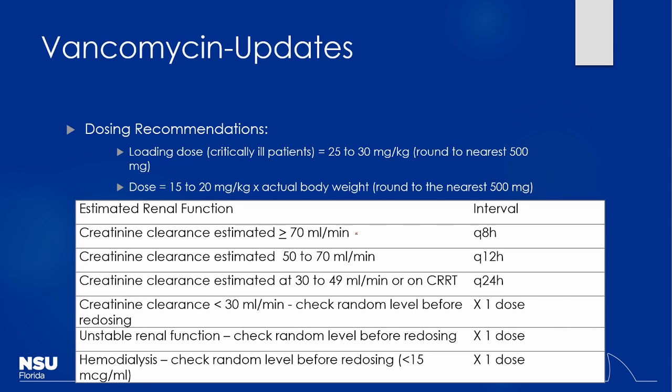Patients' renal function can change over time — ICU patients can change day to day. If you give a loading dose, you're at steady state right away, so you might check the level before the second dose. Loading doses are considered for critically ill patients. In the ER, a one-time dose doesn't require knowing renal function first, since renal function affects frequency, not the dose itself — you always start with 15–20 mg/kg, then adjust the frequency based on renal function.